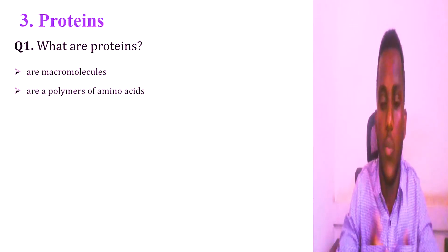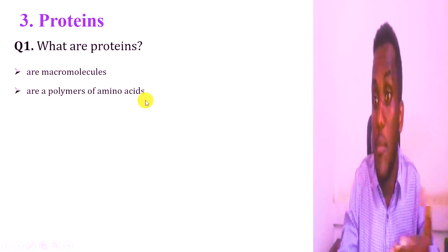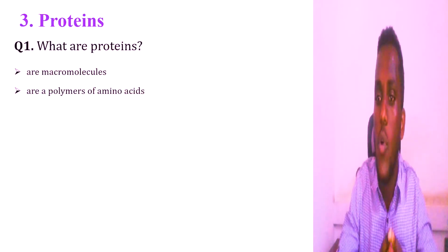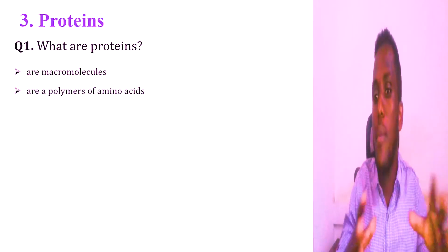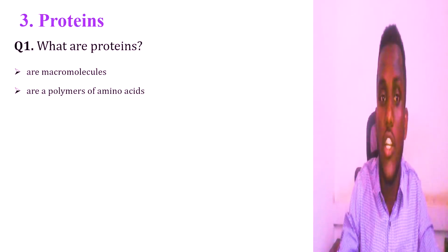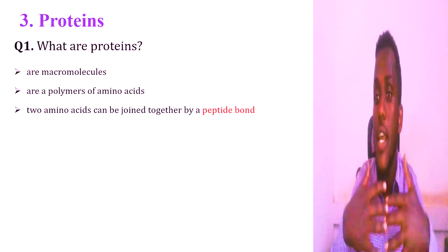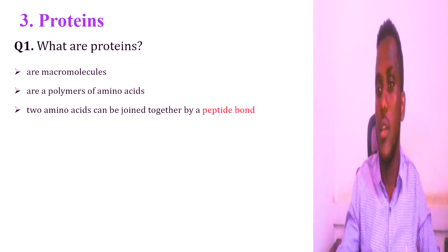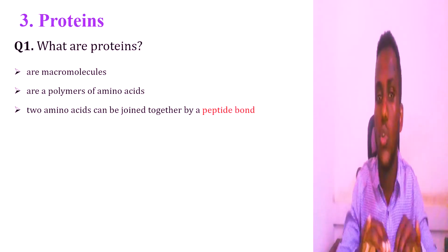Many amino acids are joined together by peptide bonds to form the protein. Amino acid plus amino acid plus amino acid, joined by peptide bonds, forms the protein. That is the building block of protein is amino acid.